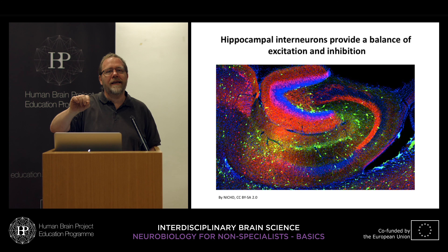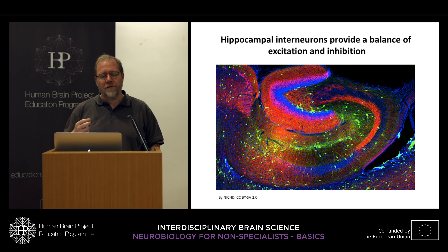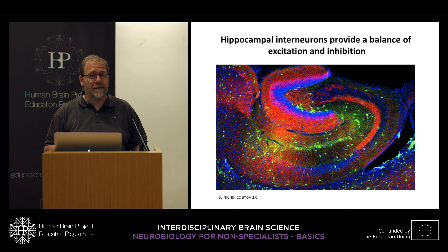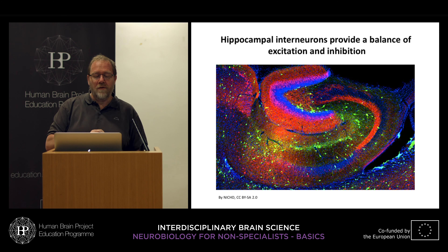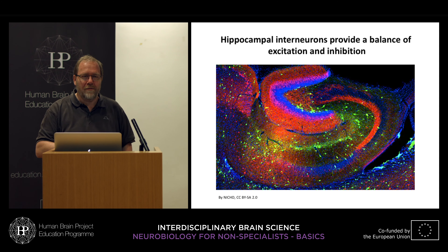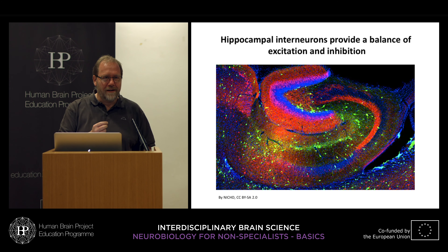HM was able to learn this mirror-tracing skill — this kind of learning goes through different structures. He was exposed to this experiment several times, and one day he came up with the comment that he thought it would be much more difficult. So he could not remember that he had done it twenty times, but he had learned the skill.